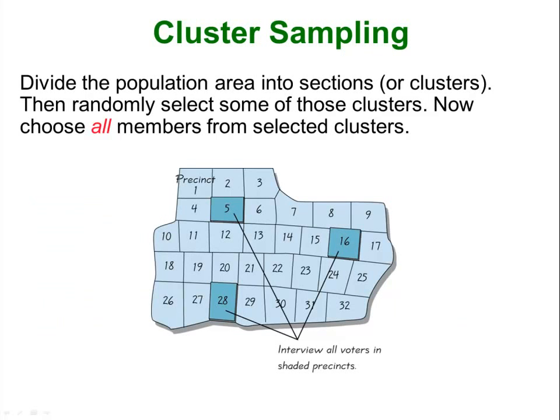Cluster sampling is similar yet quite different. You are still taking all of your items and putting them in groups — this time called clusters. But instead of randomly sampling from each cluster, you choose a random selection of clusters and then take all of the items from each chosen cluster. You can think of this as voting districts: take all the voting districts in the state of Washington, randomly choose three of those districts, and then sample every person in each of those three districts. That would be a version of cluster sampling.